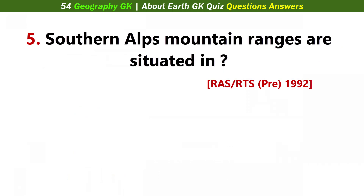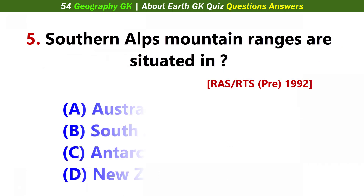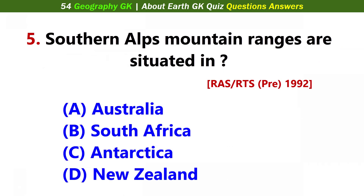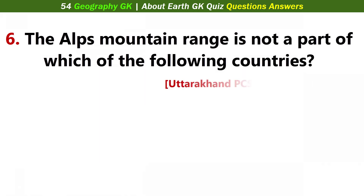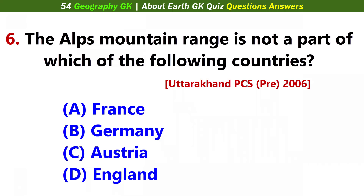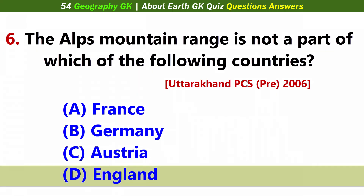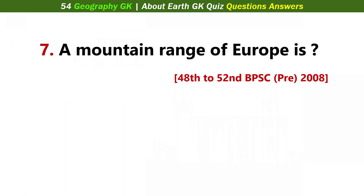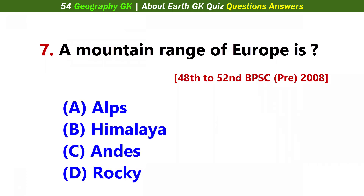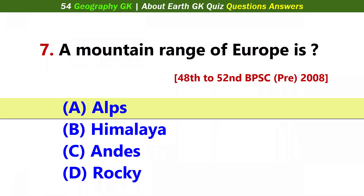Southern Alps mountain ranges are situated in... Answer D: New Zealand. The Alps mountain range is not a part of which of the following countries? Answer D: England. A mountain range of Europe is... Answer A: Alps.